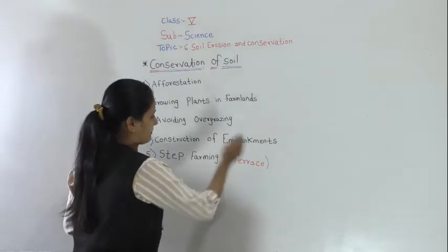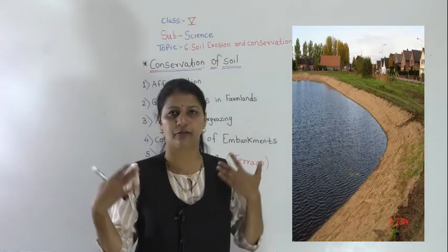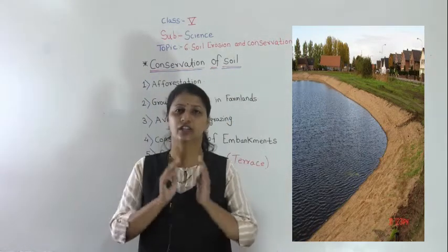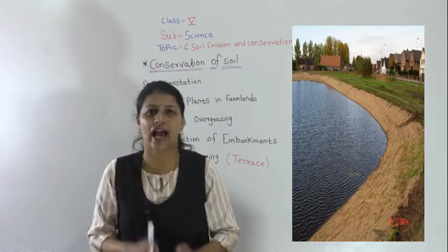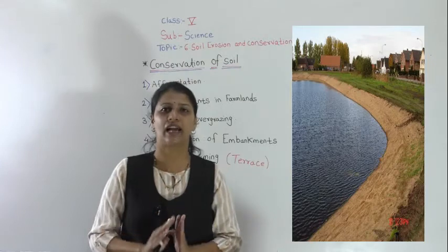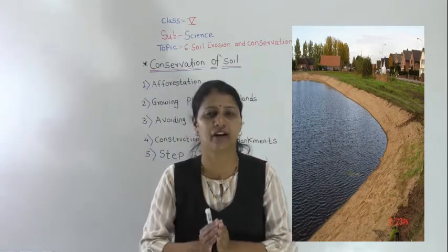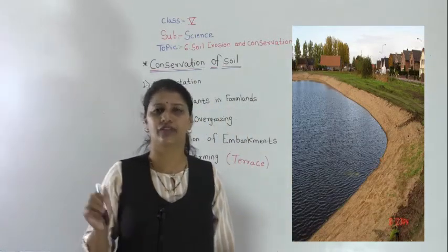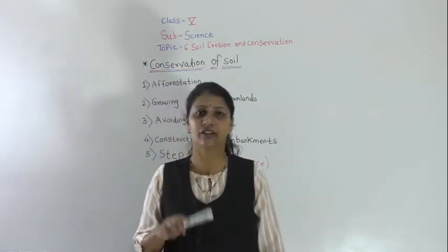The next method is the construction of embankments. Where rivers and streams are flowing, strong embankments should be built of rocks and stones, which will help to prevent the soil from flowing away through the water.